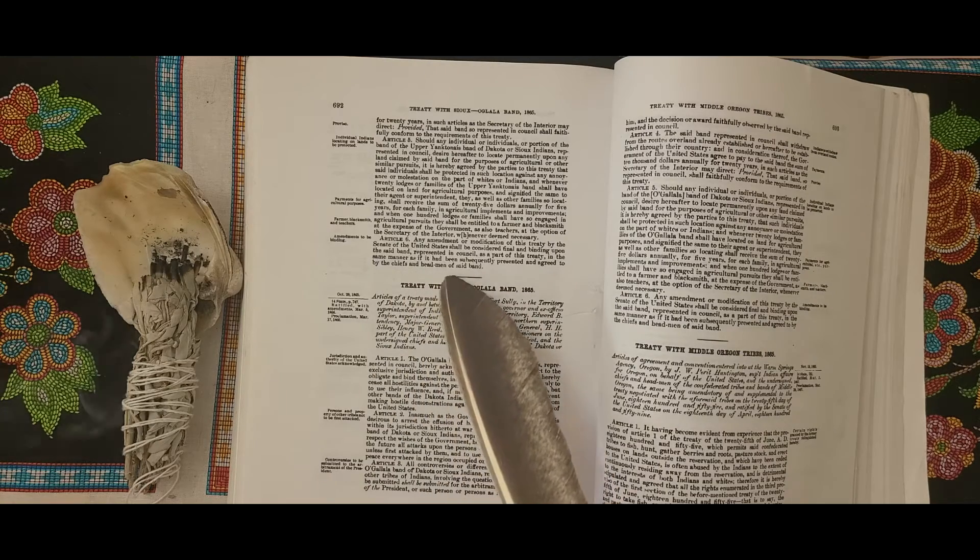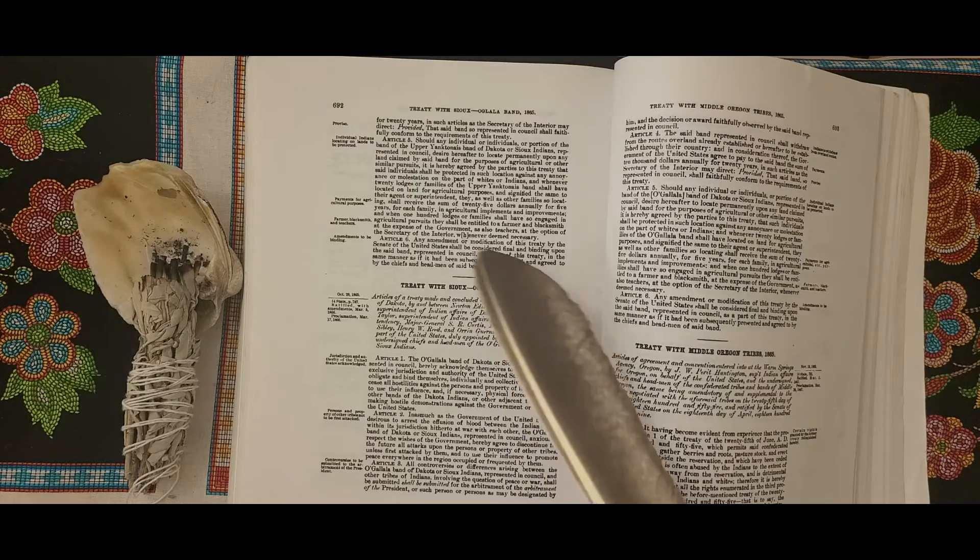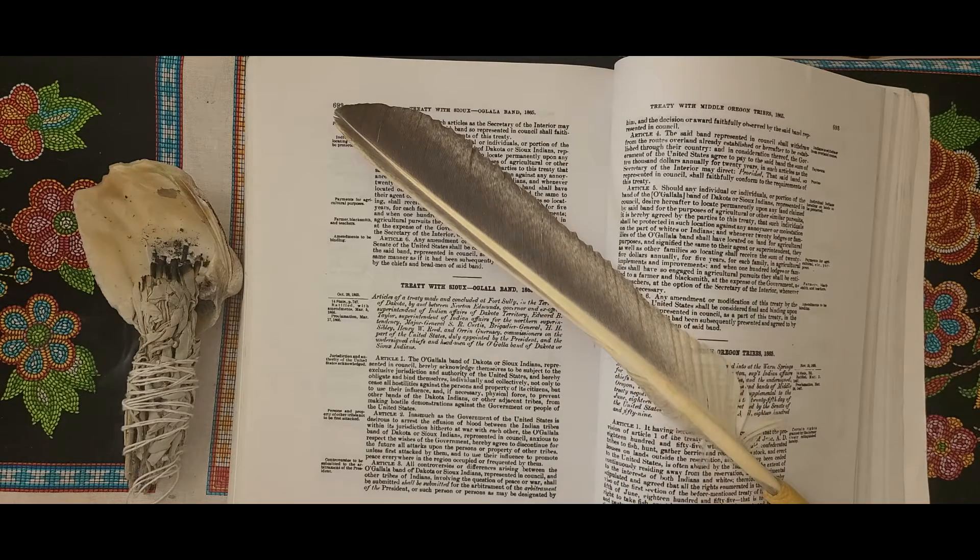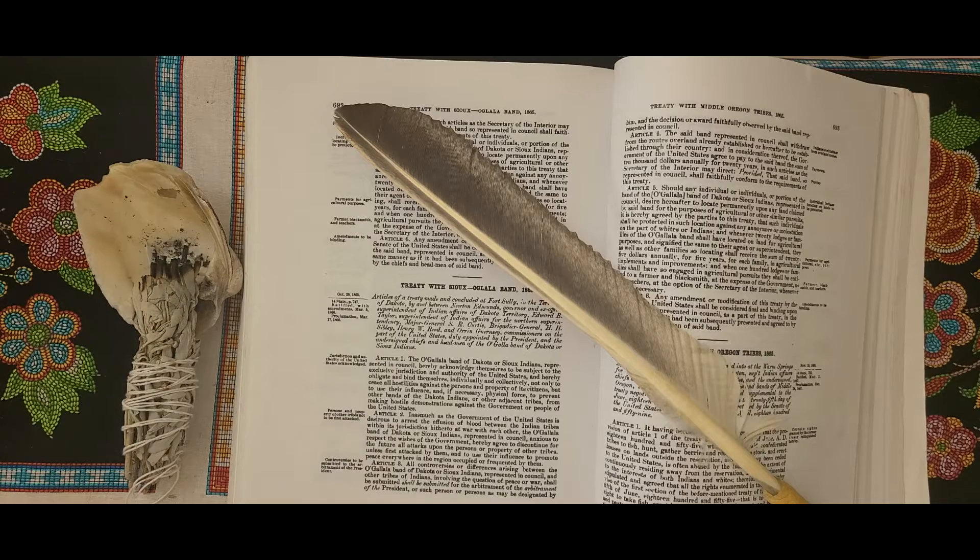In testimony whereof, the commissioners on the part of the United States and the chiefs and headmen of the said Upper Yanktonai Band of Dakota or Sioux Indians have hereunto set their hands this 20th day of October, 1865, after the contents had previously been read, interpreted, and explained to the chiefs and headmen.